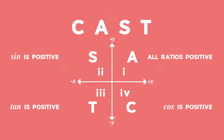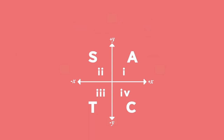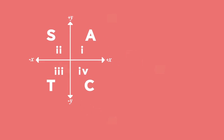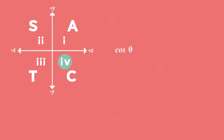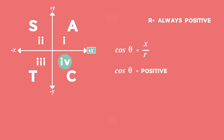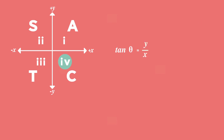We can prove the CAST rule by taking any of the ratios in any of the quadrants. For example, in the fourth quadrant cos theta is x over r, and we know that in the fourth quadrant x is positive and r will always be positive. Therefore, cos of theta in the fourth quadrant will be positive. If we were to take tan of theta in the fourth quadrant, we know that tan theta is y over x, and in the fourth quadrant y is negative and x is positive. Therefore, we will get a negative answer.